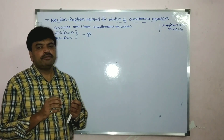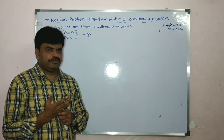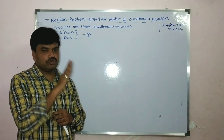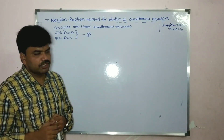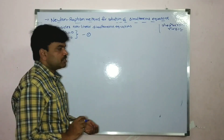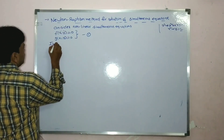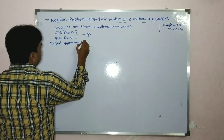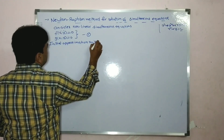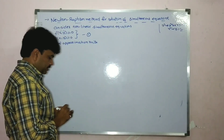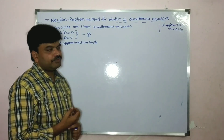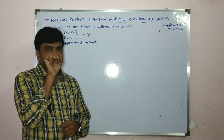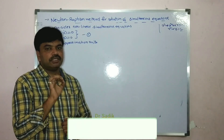For that, we start with an approximate value. From approximation we go to exact value. I am taking initial approximation x0 and y0. Sometimes x0 and y0 are mentioned in the problem; sometimes they are not mentioned in the problem.